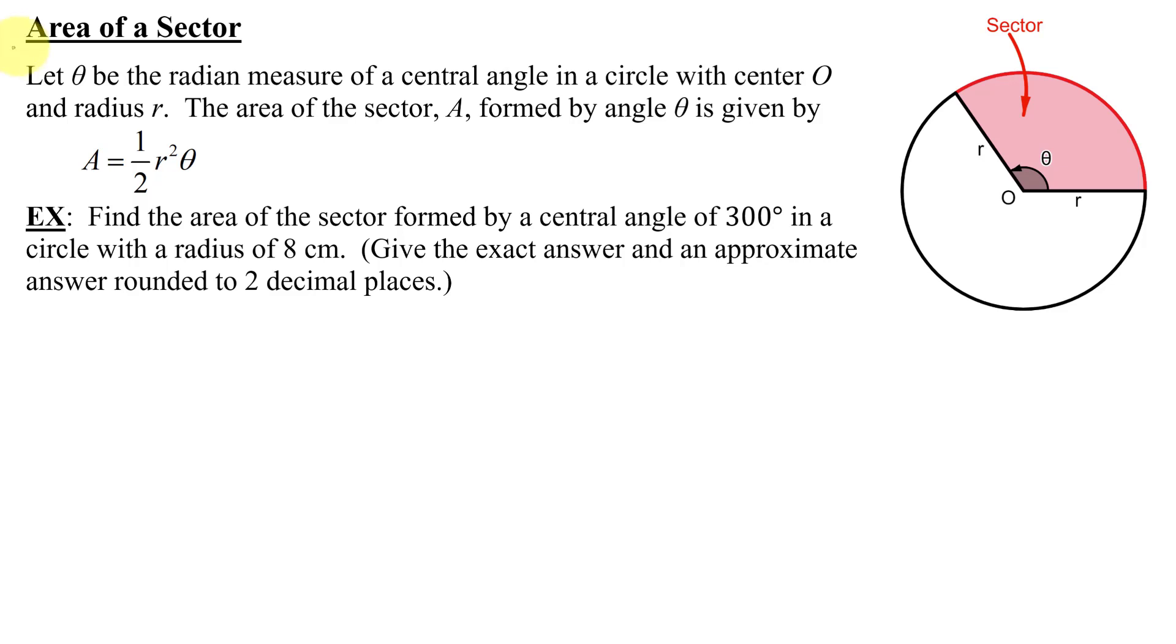This example deals with the area of a sector. Quickly reviewing, let theta be the radian measure of a central angle in a circle with center O and radius R. Here is our circle, center O, radius R, and theta is the central angle.